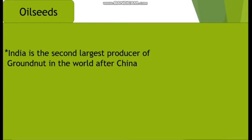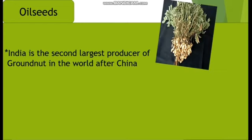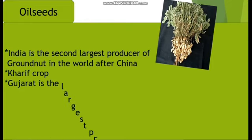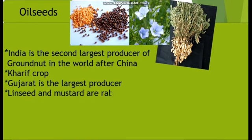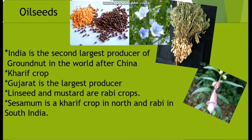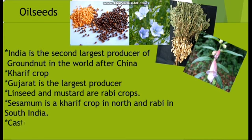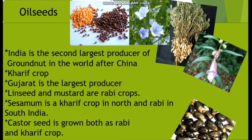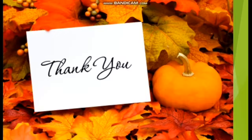India is the second largest producer of groundnut in the world after China. Groundnut is a Kharif crop and accounts for about half of the major oil seeds produced in the country. Gujarat is the largest producer of groundnut. Linseed and mustard are Rabi crops; sesame is a Kharif crop in the north and a Rabi crop in south India; castor seed is grown both as Rabi and Kharif crop. Thank you children — we'll meet in the next video.